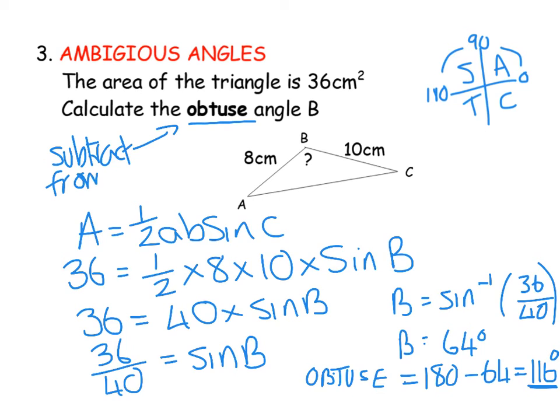Okay, if you're asking for an obtuse one. There are questions that sometimes say find possible sizes. So it mentions plural. If that was the case, you would say angles are 64 and 116.